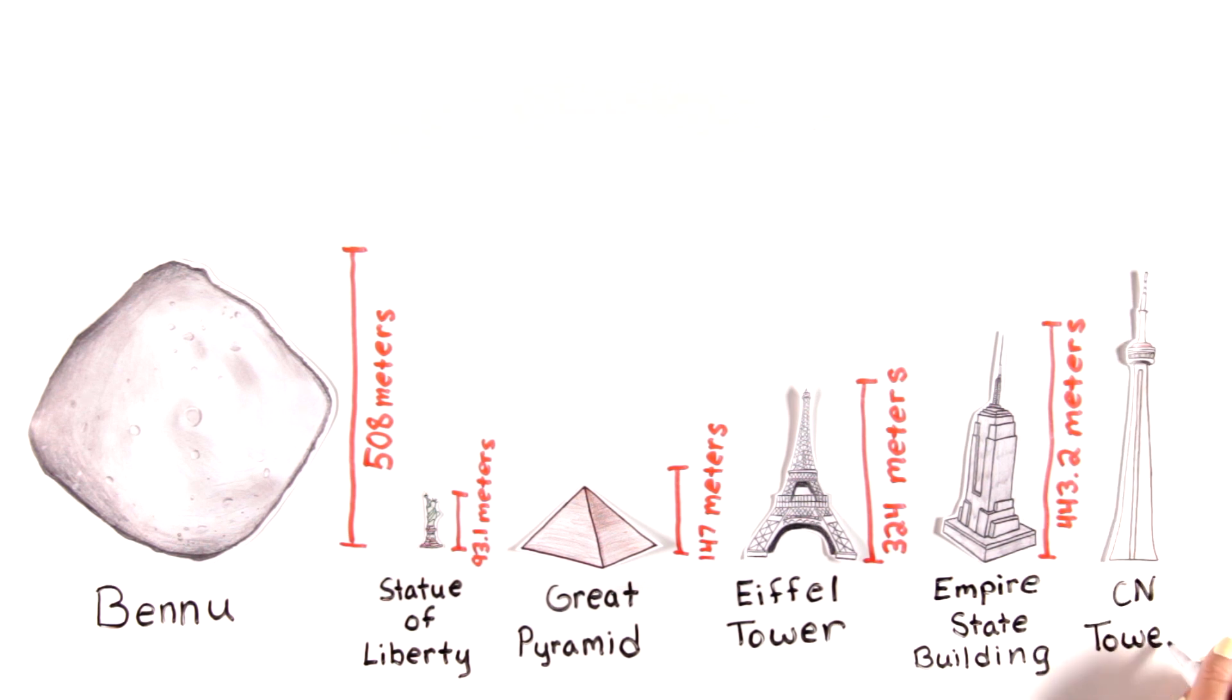But taller than Bennu, at 553 meters high, is the CN Tower in Toronto, Ontario, Canada.